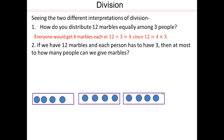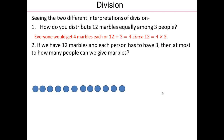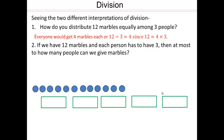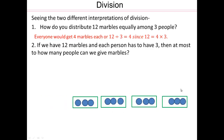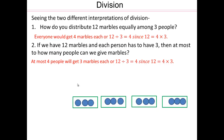What if you have 12 marbles and each person has to have 3 marbles? Now we give 3 marbles at a time — we don't know how many people. Put 3 at a time into groups until all 12 are exhausted. We needed 4 groups: 3 marbles per person, 4 people can get them. So again, 12 divided by 3 is 4, but the interpretation is very different. Before: 3 buckets with 4 marbles each. Now: 4 buckets with 3 marbles each.